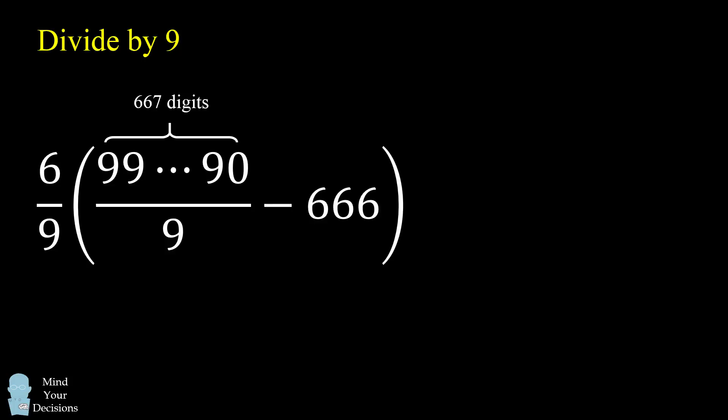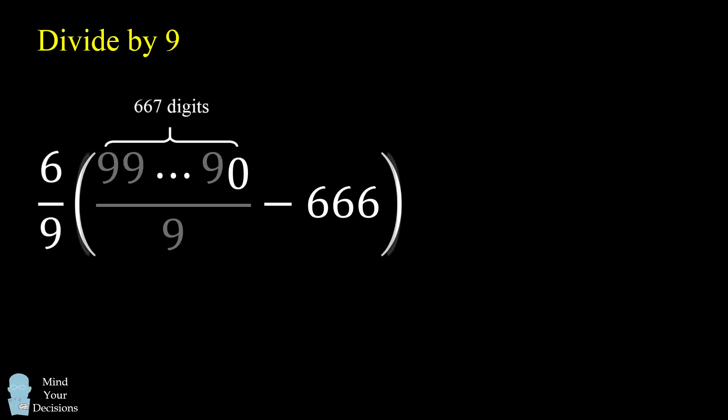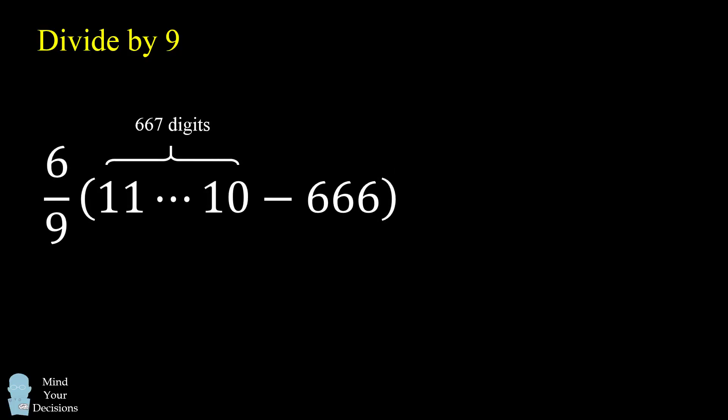We now need to divide by 9. So a number that has only 9's and then a 90 at the end, when we divide that by 9, it'll have only 1's and then a 0 at the end. It'll still be the same number of digits.